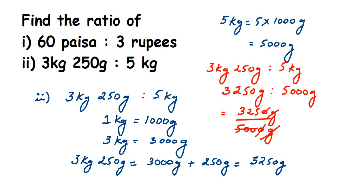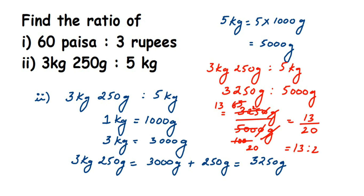Dividing by 5: 5 goes into 5000 to give 100, and 5 goes into 3250 to give 650. Dividing by 5 again: 5 goes into 100 to give 20, and 5 goes into 650 to give 130 — wait, simplifying gives us 65 over 100, then dividing both by 5 gives 13 over 20. So the ratio is 13 is to 20. I cannot simplify 13 and 20 further because 13 is a prime number, so this is the final answer.